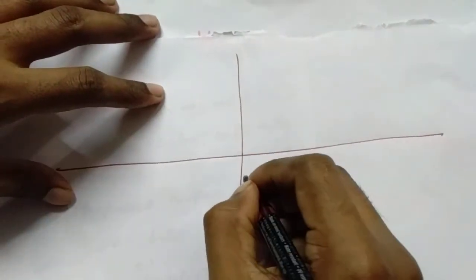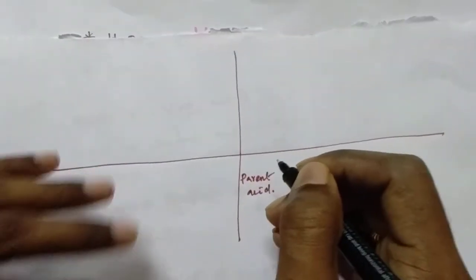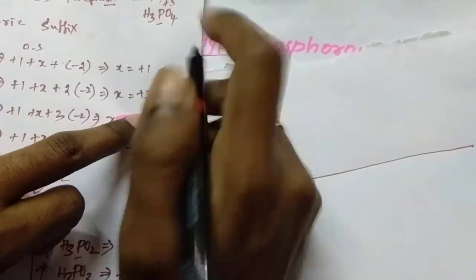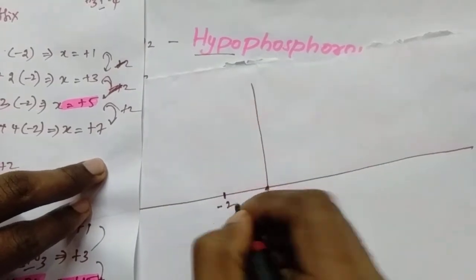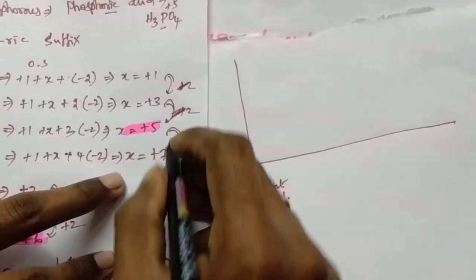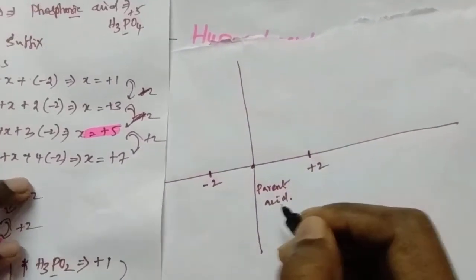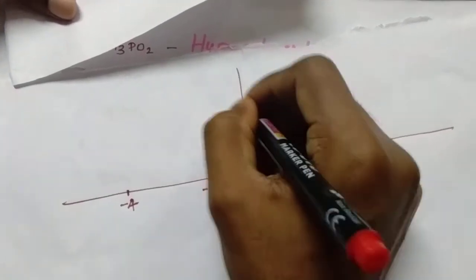So, based on this, we are going to draw a diagram or graph. Draw one straight line, then draw another straight line. This position is for the parent acid. Fix the parent acid here. You can see the pattern: the parent acid is at +5 oxidation state. Going down from parent: minus 2 gives one acid, minus 4 gives another. Going up from parent: plus 2 gives another acid.